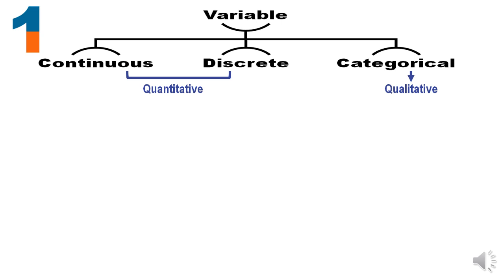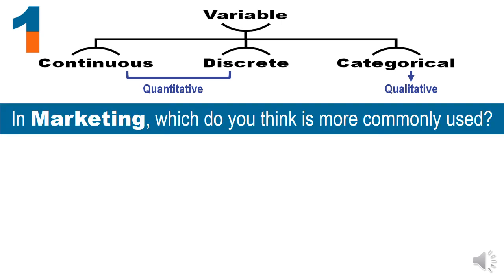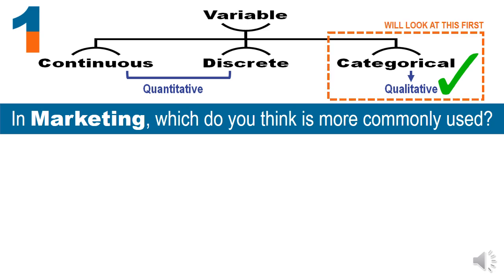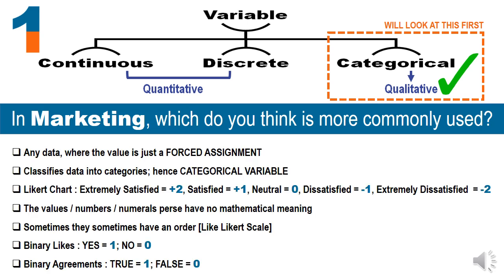Continuous and discrete are quantitative, and categorical is qualitative. Now in a stream like marketing, which do you think would be more commonly used? Given your penchant for numbers you would assume it is quantitative — you are wrong. The answer is qualitative. Any data where the value is a first assignment is a categorical variable. Take male versus female: I would assign the number 1 for male and 2 for female. It is just a classification job into two categories, and hence called a categorical variable.